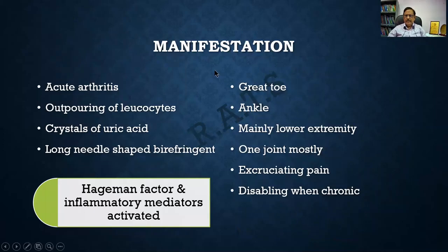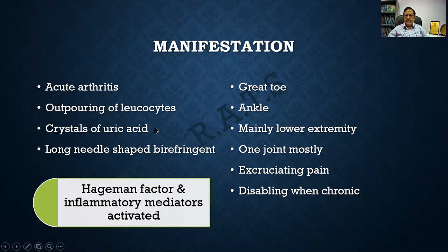The manifestations of gout include acute arthritis with severe, unbearable pain, outpouring of leukocytes — you will see a lot of neutrophils under the microscope — all because of the crystals of monosodium urate that attract leukocytes. These crystals are long, needle-shaped, and birefringent. When seen on H&E staining, they are non-staining and appear plain. All the inflammation is because of the Hageman factor and other inflammatory mediators studied in earlier chapters.